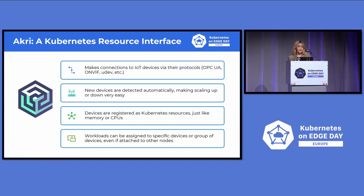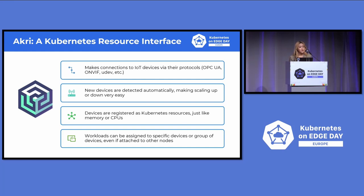The solution for this is Akri, which stands for a Kubernetes Resource Interface. Akri is currently a sandbox project and makes connections to IoT leaf devices via their protocols. Currently, Akri supports common protocols like OPC UA, ONVIF, and UDEV, but users can also use a template for writing custom protocol handlers. New devices are detected automatically, which makes scaling really easy, and devices taken off or down due to network availability will also automatically disappear.